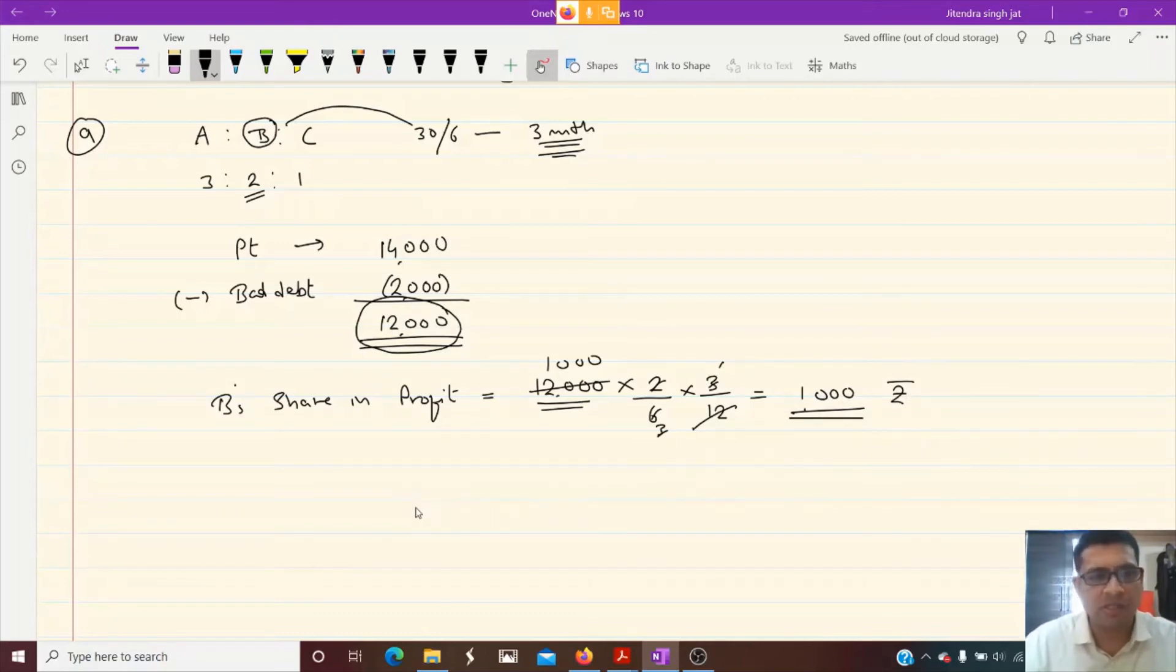If there is a need to pass journal entry also, we can pass journal entry also. How can we give profit to B? By passing simple journal entry. Yesterday I explained profit and loss suspense account debited to B's capital account. This is the entry which we need to pass in case of death of a partner. If partner is dying on any of the date other than 31st March, then a temporary account is opened to transfer profit or loss to deceased partner's capital account.